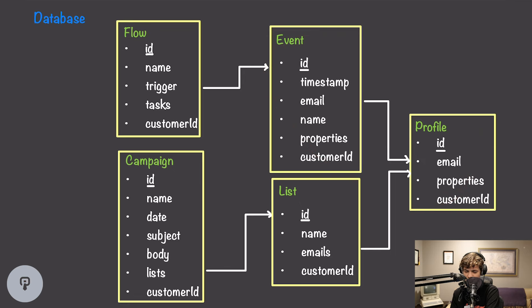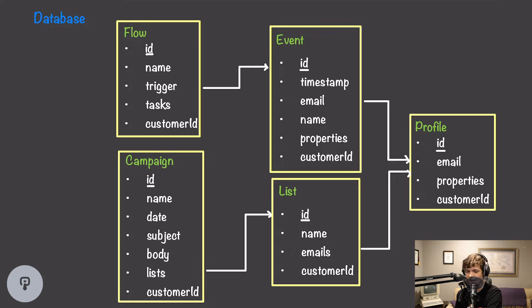Now that we have all these new API routes, we have more data to store. Our profiles and events haven't changed. We're introducing lists, which have a unique identifier, a name, a list of emails inside, and a customer ID. If we were using a relational database, we could create a separate table where each record includes a list name and one member email. However, based on our requirements, we're only ever querying the entire list at once to send a campaign, so there's no real need for that complexity — we can simply use an array field to store all email addresses.